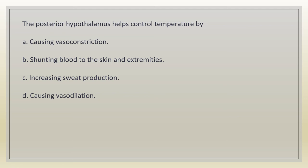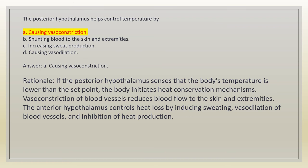The posterior hypothalamus helps control temperature by: a. causing vasoconstriction. b. shunting blood to the skin and extremities. c. increasing sweat production. d. causing vasodilation. Answer: A. Causing vasoconstriction. Rationale: if the posterior hypothalamus senses that the body's temperature is lower than the set point, the body initiates heat conservation mechanisms. Vasoconstriction of blood vessels reduces blood flow to the skin and extremities. The anterior hypothalamus controls heat loss by inducing sweating, vasodilation of blood vessels, and inhibition of heat production.